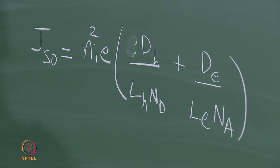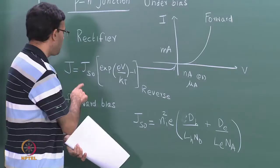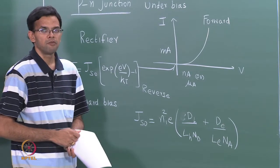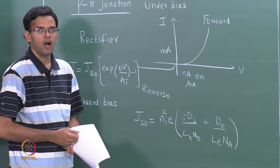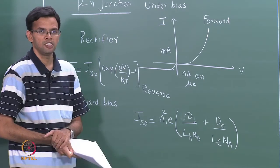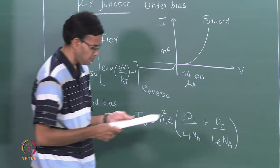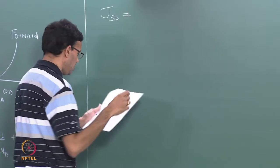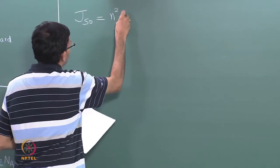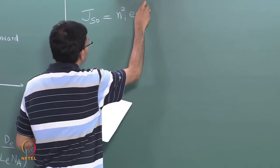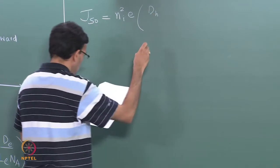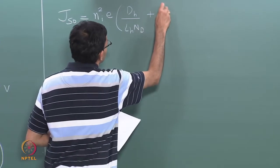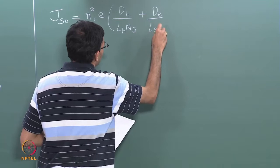Today we are going to start with an example to calculate some of these values of the current in forward bias and also the reverse saturation current. But before we do that, I want to see how this reverse saturation current will change if you change the material. Let me write this expression for J_S0 one more time.